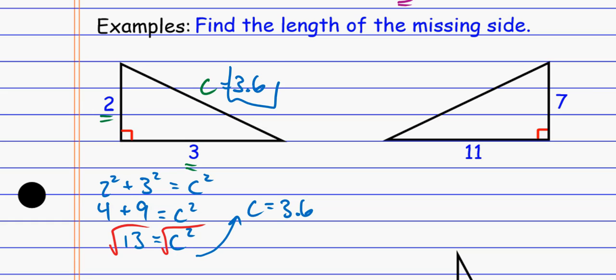So the missing side is 3.6, and one of the quick things we want to check, is that the longest side? And the answer is yes, and it should be the longest side because it's across from the biggest angle.